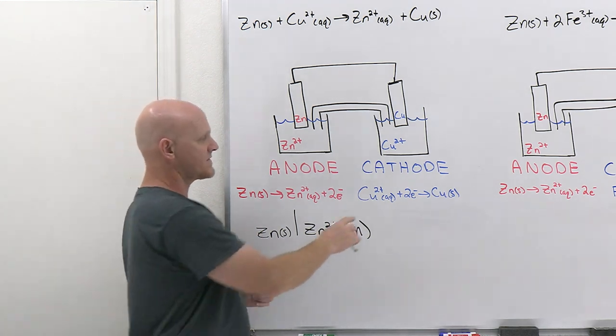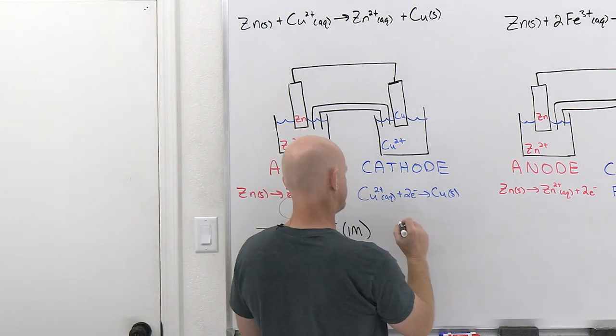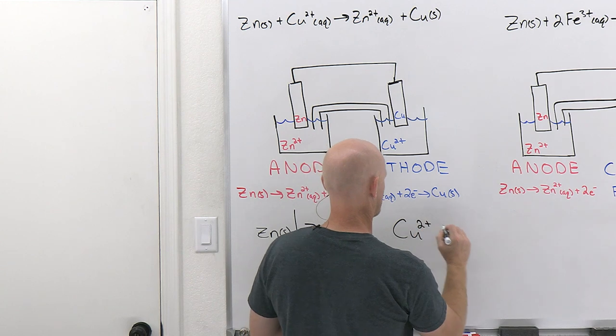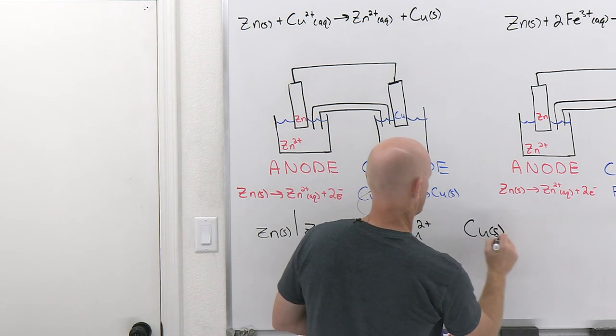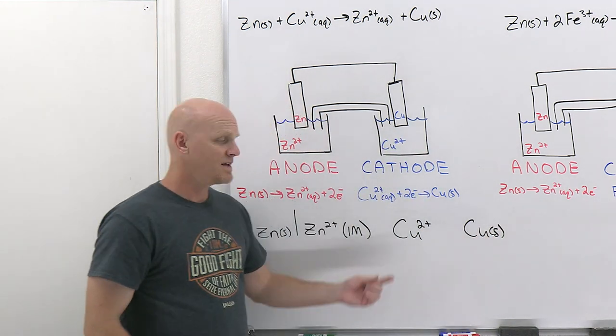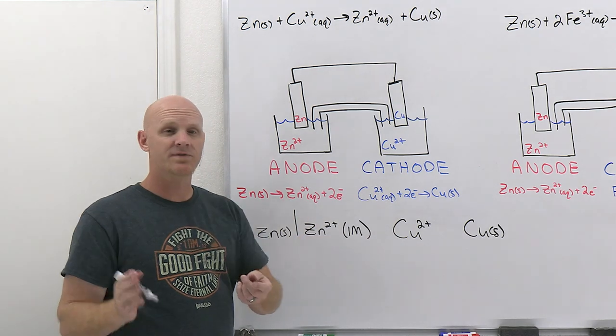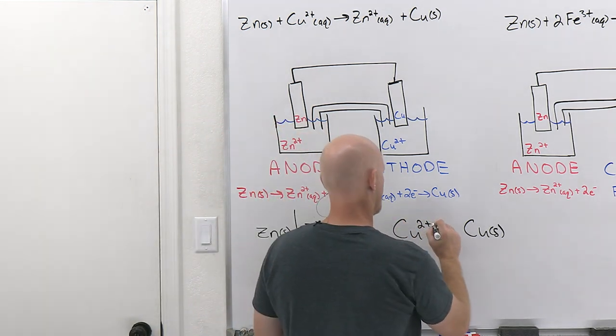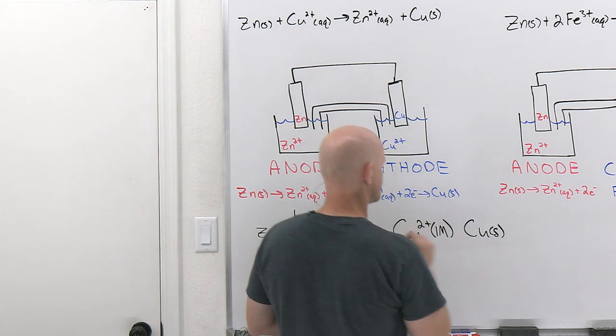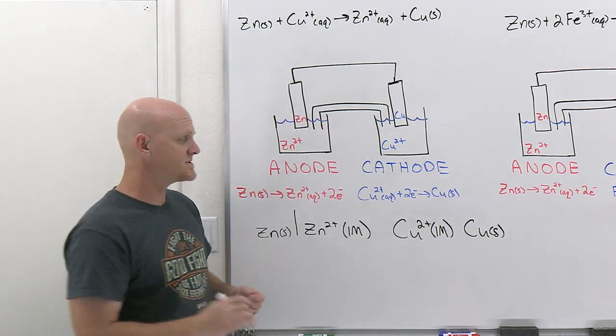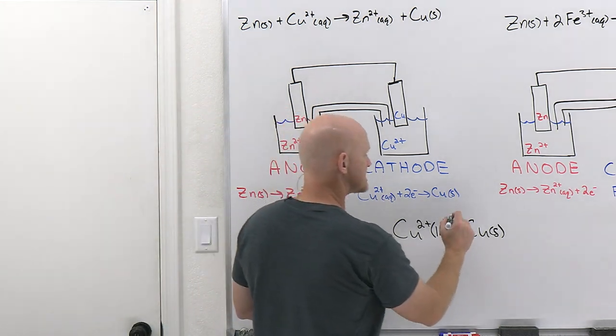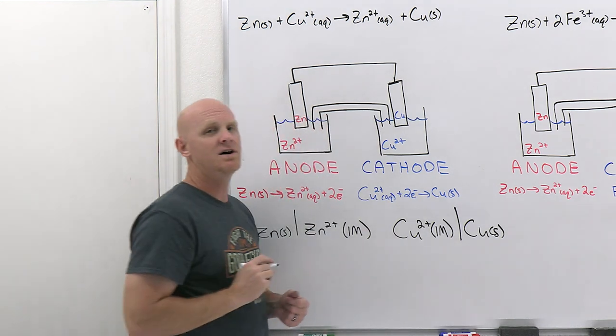On the other side, we've got copper 2+ turning into copper. The copper product there is a solid. The copper 2+, once again, is aqueous, and so we've got to put its concentration in parentheses. Once again, I'm using standard conditions, so it'll be one molar concentration, and again, these are in two different phases, and so we'll put a single slash between them.